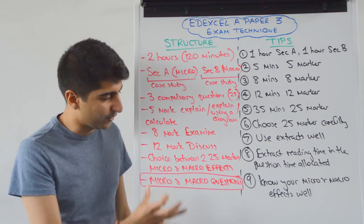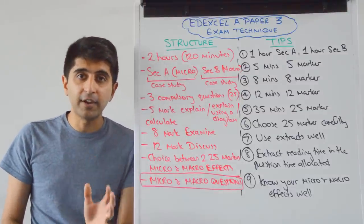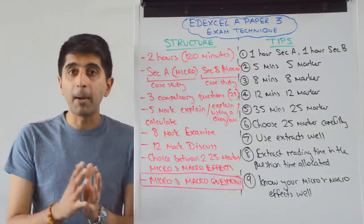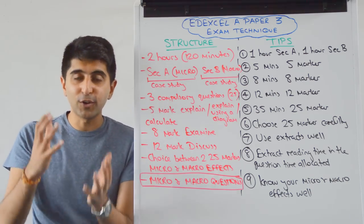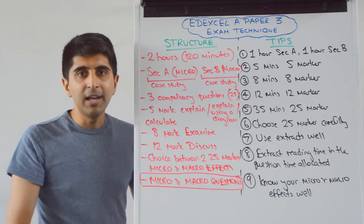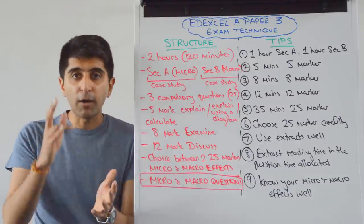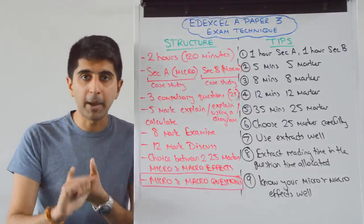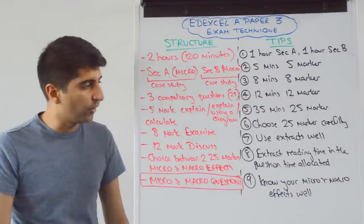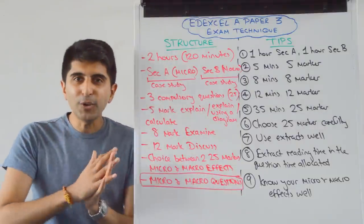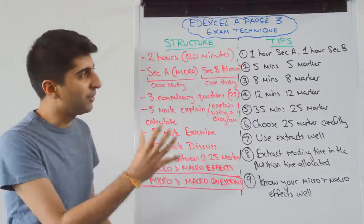You've got to know your micro and macro effects well, especially for the 25-mark question. You can practice that — check my exam technique video for the Paper 3 25-marker to see how to structure micro and macro effects. Also make sure your overall micro and macro knowledge is perfect. By this point you'll have done Paper 1 and Paper 2, so it should be strong — but in the time after Paper 2, keep revising macro and re-revising micro. Both need to be perfect for Paper 3. Don't take anything for granted — re-revise everything.